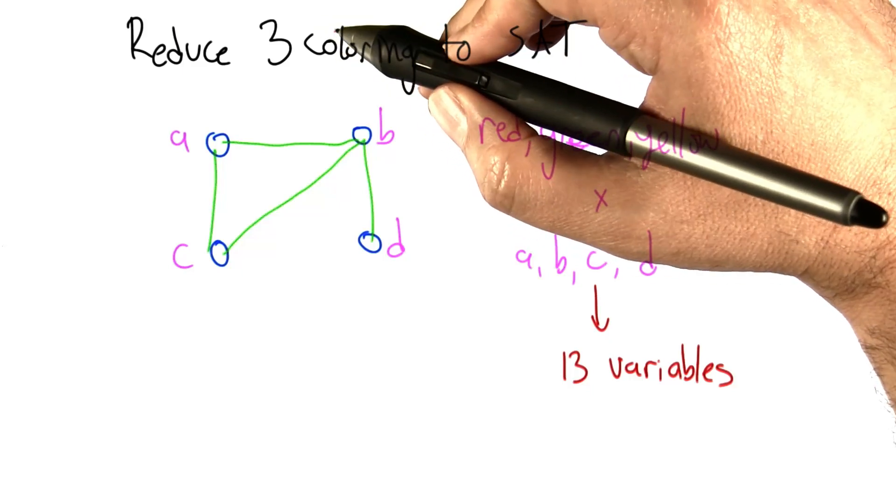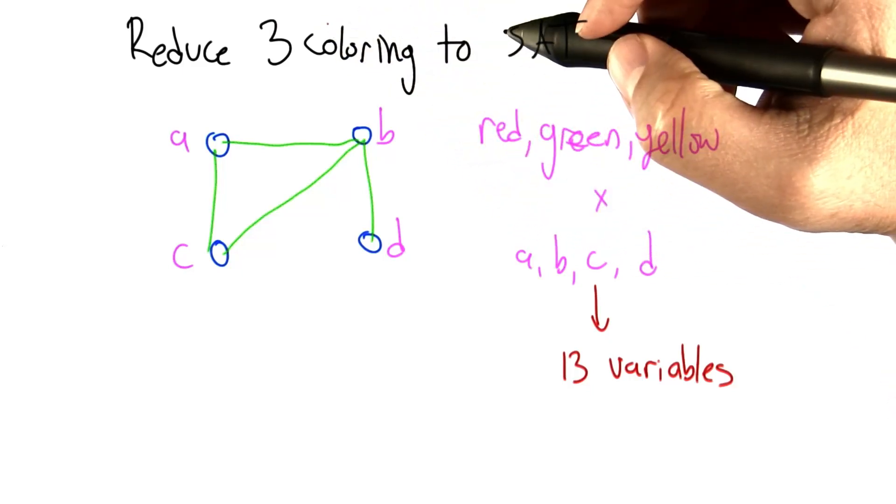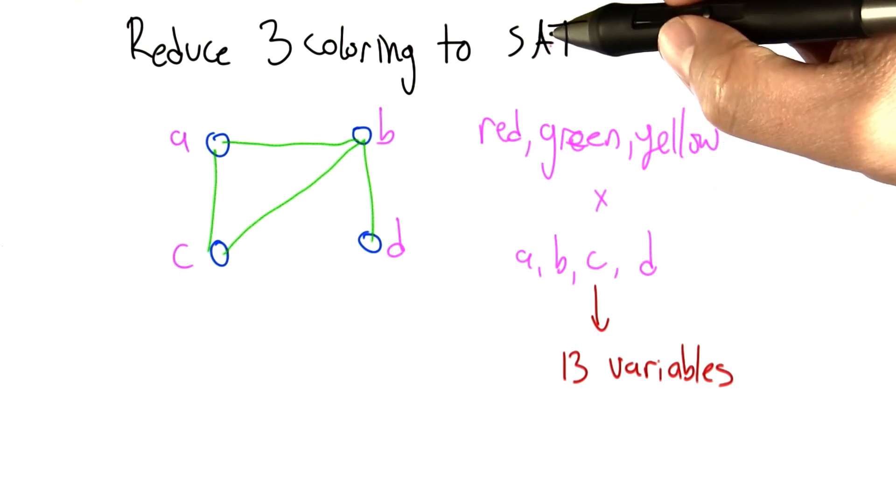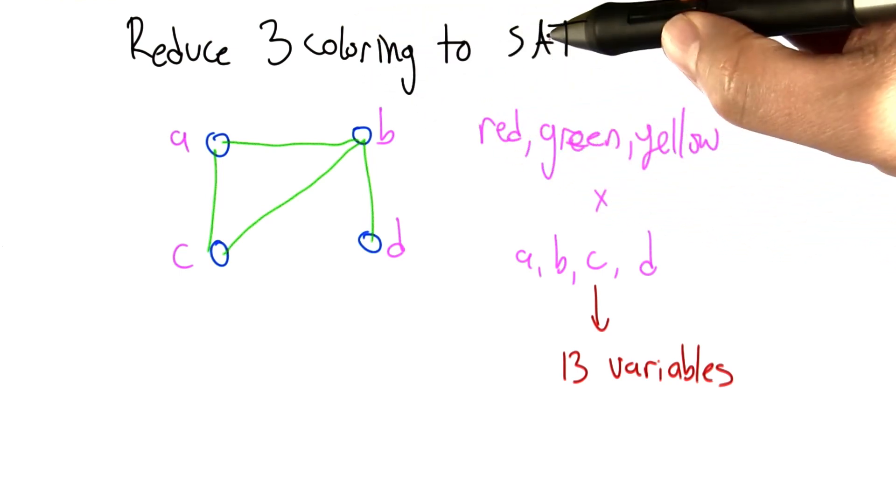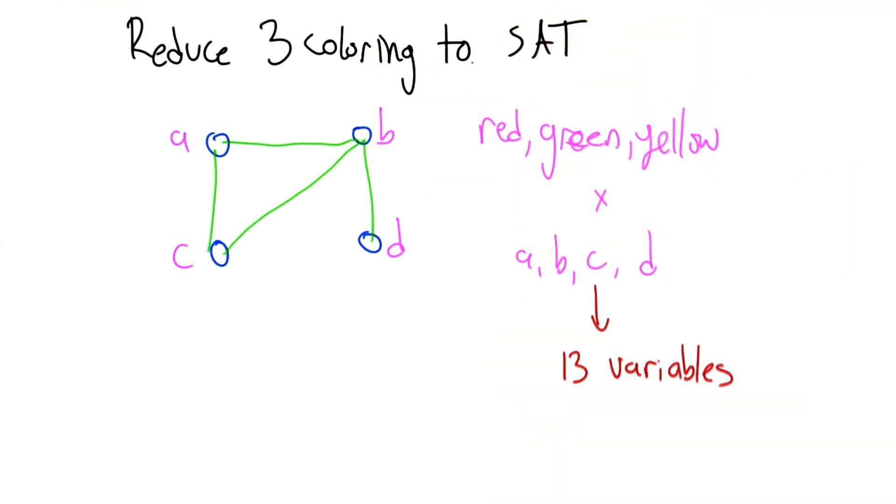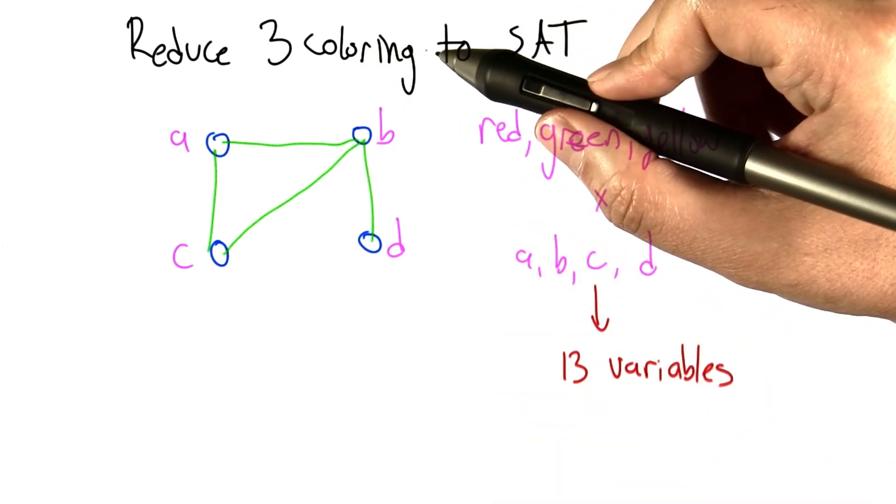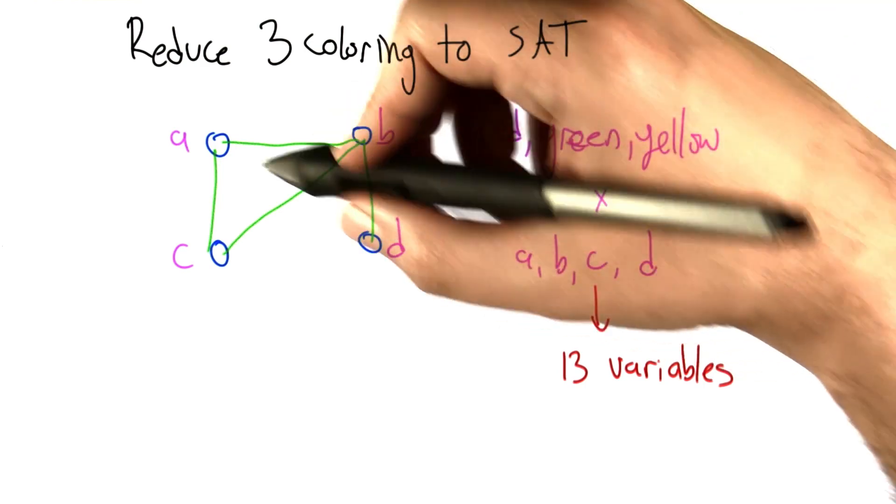So since 3-coloring is in NP and SAT is NP-complete, meaning that it's NP-hard, it has to be the case that we could use SAT to solve 3-coloring problems. But it's actually a little bit interesting to see how you might do that. So let's take a look.